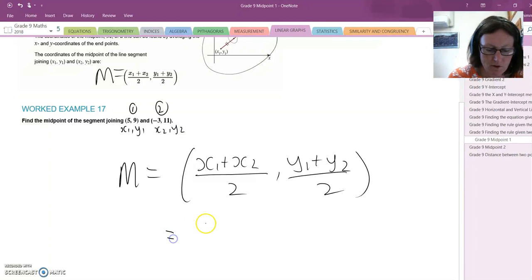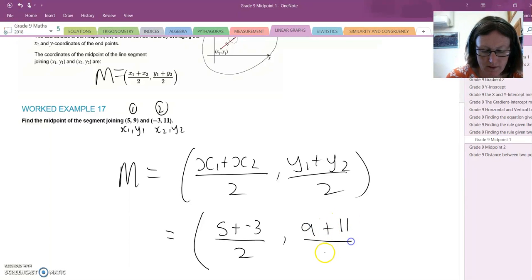We're now going to substitute them into this formula. Our x.1 is 5 and we're going to add negative 3 because x.2 is negative 3. Our y.1 is 9 and we're going to add 11 because our y.2 is 11.